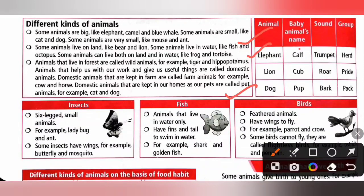Domestic animals that are kept in our homes as our pets are called pet animals, for example cat and dog.